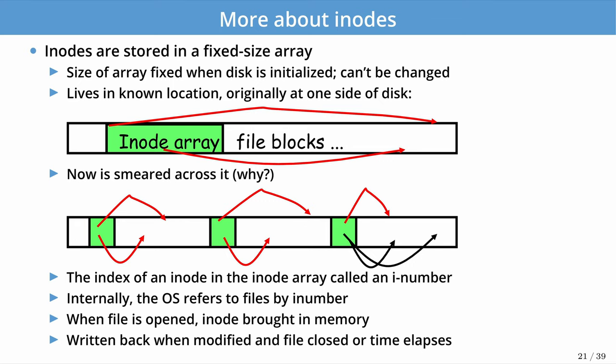One evolution, the Fast File System, split the inode array across the entire disk, co-locating inodes with the data blocks belonging to those files to reduce seek overhead. In the original layout you expect an average 8-millisecond seek. By splitting the disk into small groups of inodes and data blocks, you can cut this down to just the rotational delay and head settlement time — roughly a millisecond.